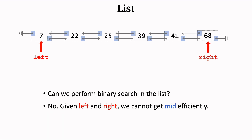Can we use a linked list to support both efficient search and efficient insertion? Unfortunately, list cannot either. Linked list does not support binary search because it does not allow random access. To perform binary search, we need to access the middle in constant time. Using a list, we cannot access the middle efficiently — we have to use an iterator that moves from the left to the middle step by step, which would take O(n) time. That's why list does not support efficient search.